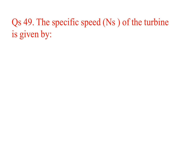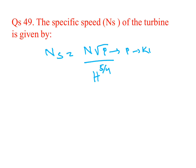The specific speed of a turbine is given by N_s = N√P / H^(5/4), where P is in kilowatts. For a pump, the specific speed is N_s = N√Q / H^(3/4), where Q is the discharge and H is the manometric head.